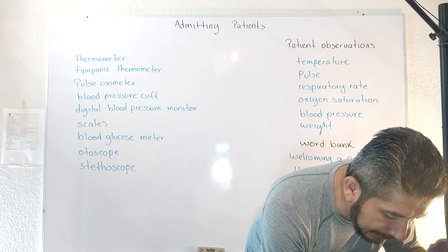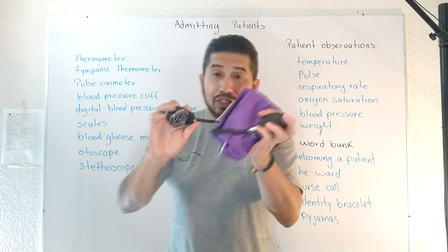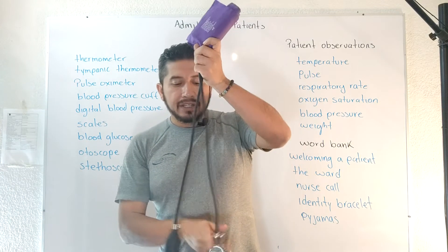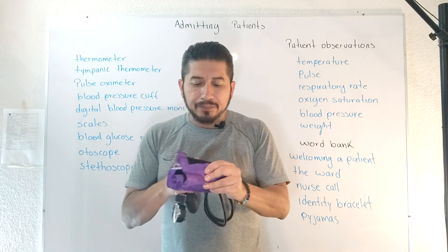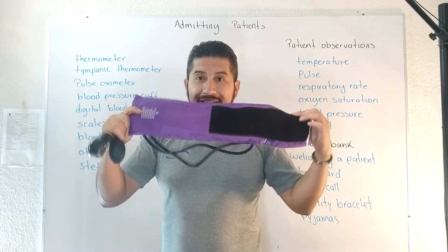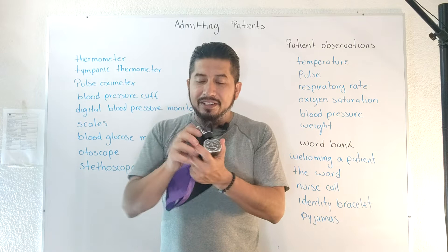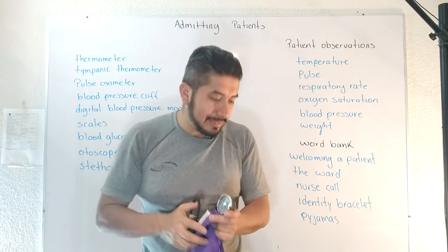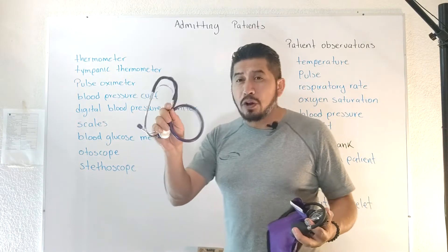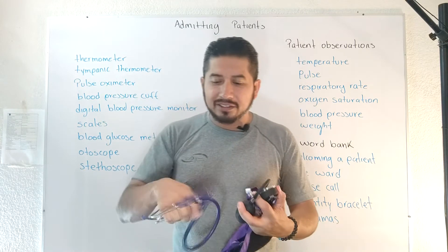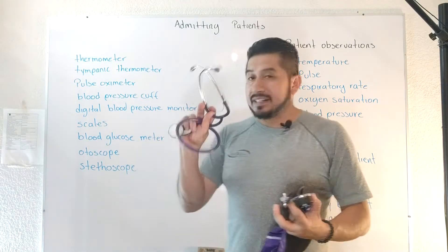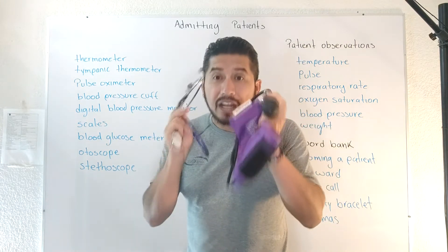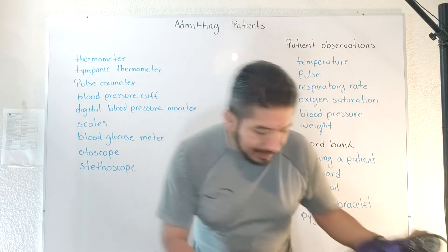We have the blood pressure cuff. Let me show you — this is the blood pressure cuff. Every time we go to the clinic or hospital, nurses use it to check our blood pressure. It has a pump and a little clock where they check the pressure. And obviously they also need the stethoscope — nurses use it frequently to check blood pressure. Remember: blood pressure cuff.